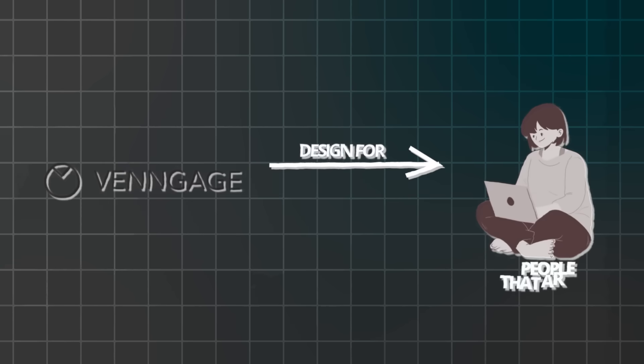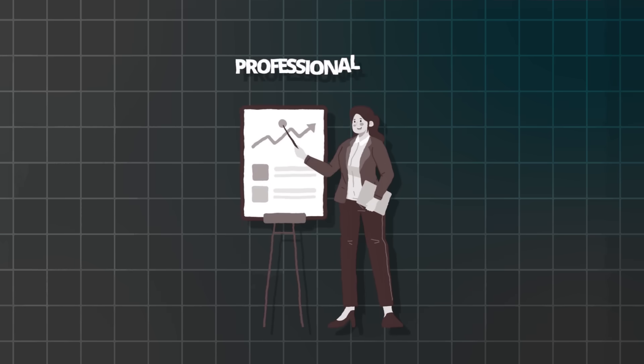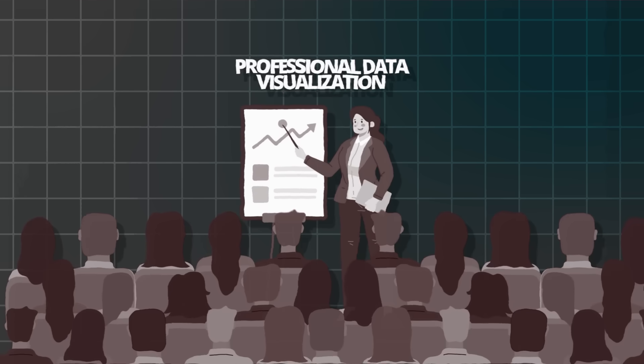Venngage's AI tools are designed for people who aren't statistics experts — the AI suggests the most appropriate chart types and even helps you write insights. You're not doing complex statistical analysis; you're just presenting your data in a professional visual way. Even simple data like survey results or basic metrics can look compelling when presented professionally. Professional data visualization shows that you take your work seriously and respect your audience's time, making you look more credible.